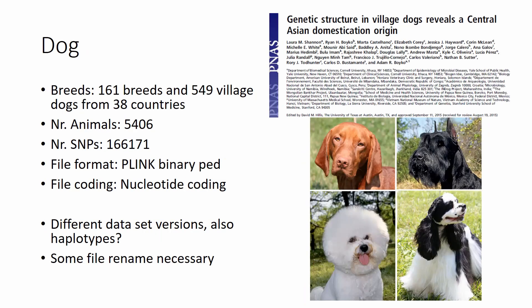We have a very neat dog dataset published in the Proceedings of the National Academy of Sciences of the United States of America. In this dog dataset we have 161 breeds and, very interestingly, about 550 village dogs from a wide range of countries. In total we speak about 5,400 animals genotyped with a rather high-density SNP chip with more than 166,000 SNPs. The genotype file format is convenient PLINK binary BED files with nucleotide coding. When you download the data there are several different versions and some files that appear to contain haplotype information. Some file renaming is necessary to load them into PLINK but this is not a big issue.